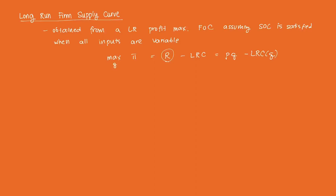We're going to derive the FOC the same way as for short-run supply. The FOC is derived by taking the derivative of profit with respect to q, which gives us p minus the derivative of long-run cost with respect to q, equal to zero. This yields the first-order condition: p is equal to the derivative of long-run cost with respect to q, which is just equal to your long-run marginal cost (LMC).